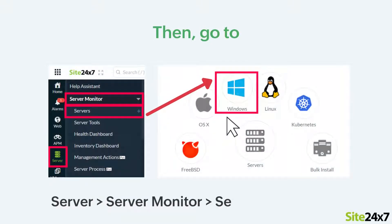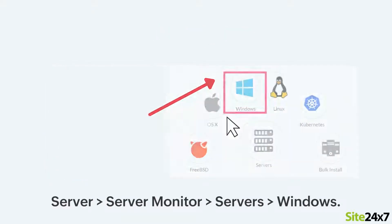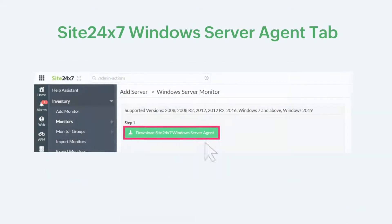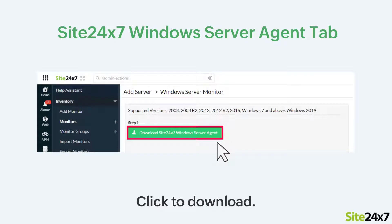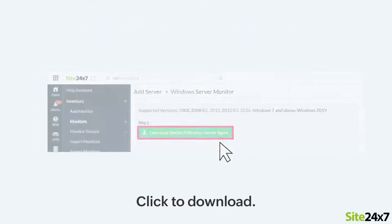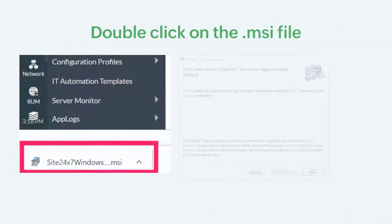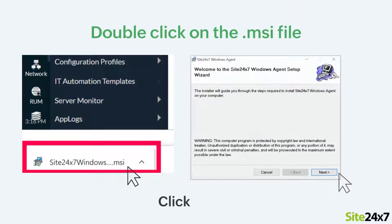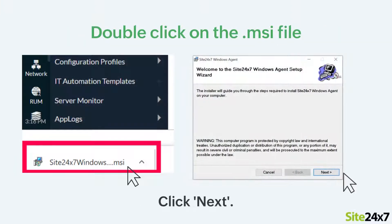Then go to Server, Server Monitor, Servers and select Windows. Next, click on the Download Site247 Windows Server Agent tab and double click on the .msi file.